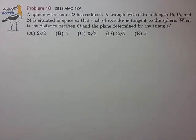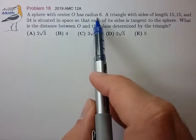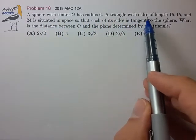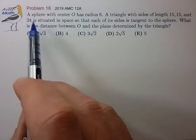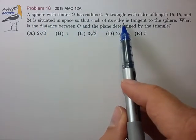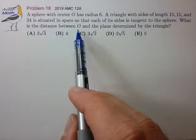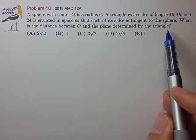Hi, this is problem 18 from the 2019 AMC 12A. A sphere with center O has radius 6, and a triangle with sides of length 15, 15, and 24 is situated in space so that each of its sides is tangent to the sphere. What is the distance between O and the plane determined by the triangle?